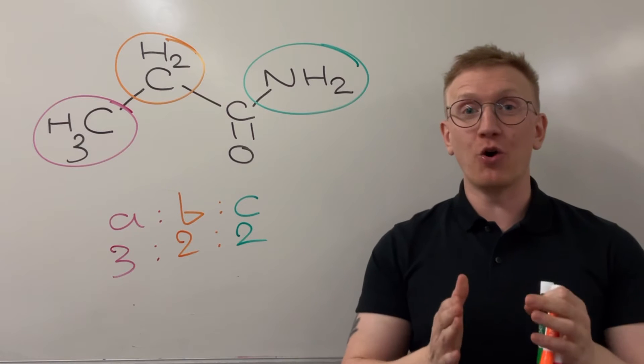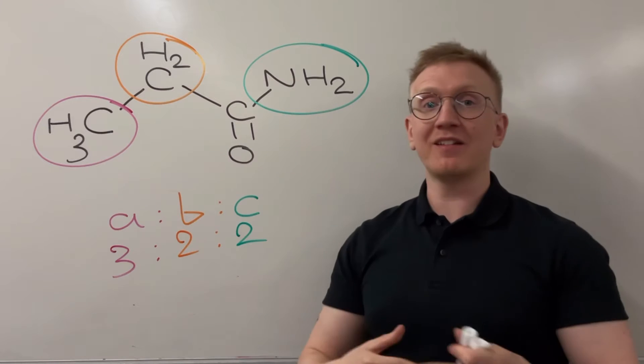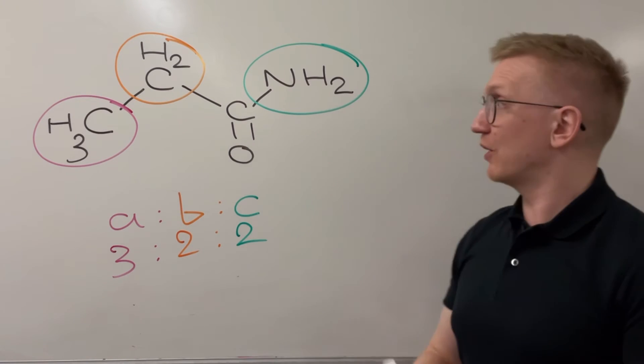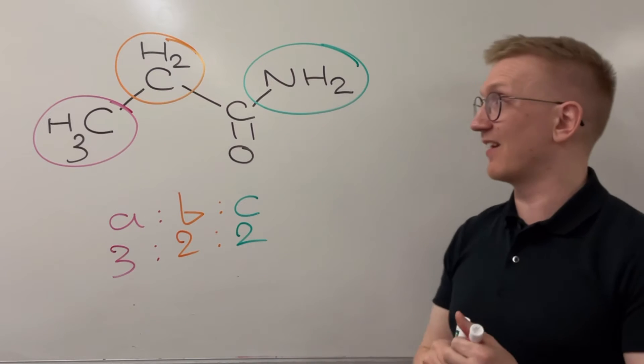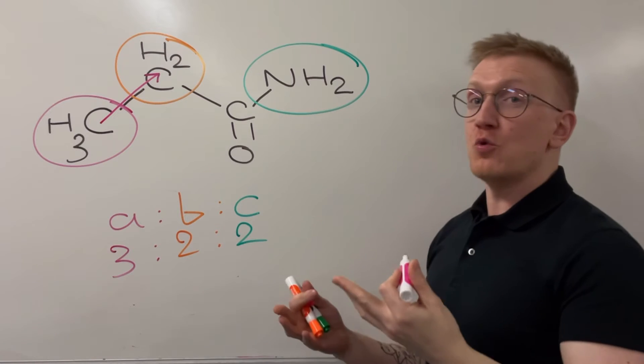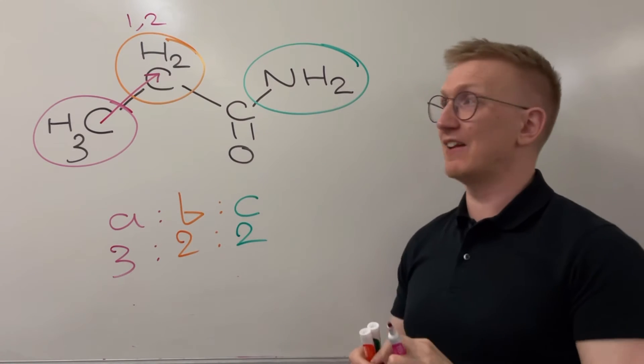Next up, it's the all-important splitting pattern. So what we need to do now is go from our environment to the next carbon up, and count how many hydrogens are there. So we're going to start over here on the far left-hand side, and we can see if we travel up to the next carbon here, we've got two hydrogens there. So we've got one, two hydrogens just there on that CH2 group.